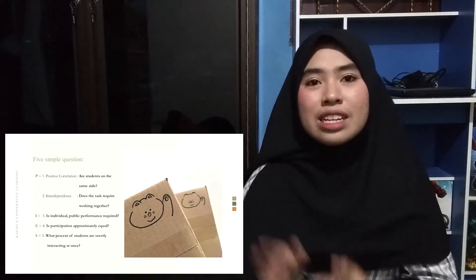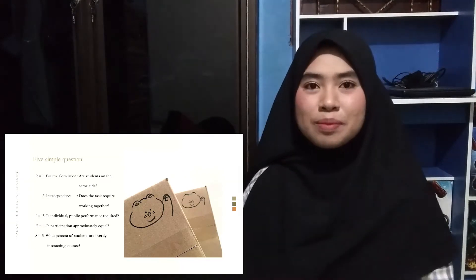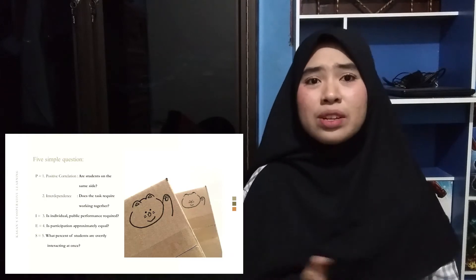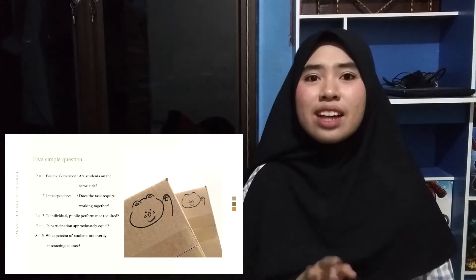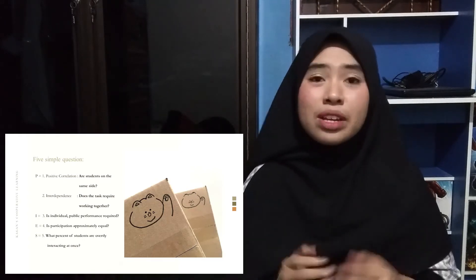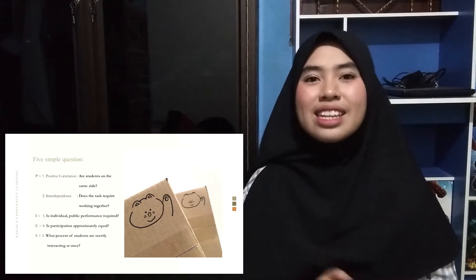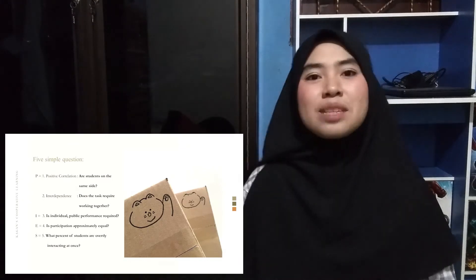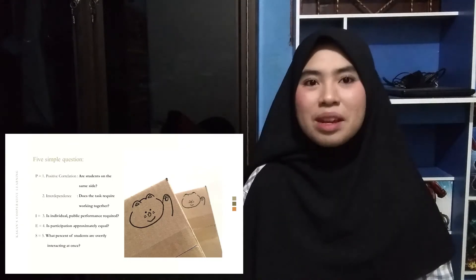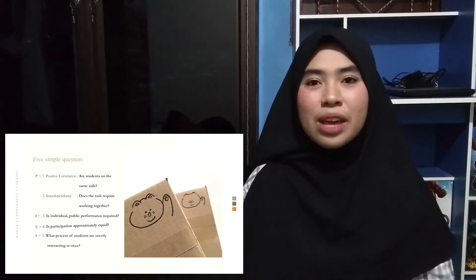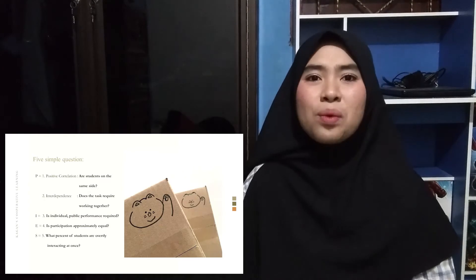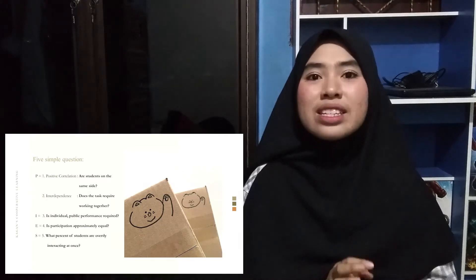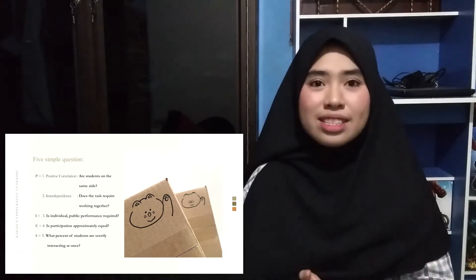By asking five simple questions we determine if P-I-E-S are in place. You can see on the slide: Are students on the same side? Does the task require working together? Is individual public performance required? Is participation approximately equal? What percent of students are overtly interacting at once?